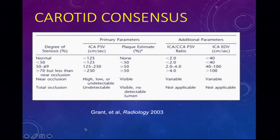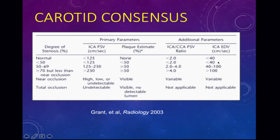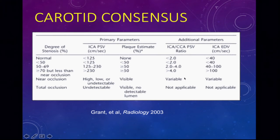We all know about the carotid consensus statement published in 2003, where we correlate the degree of stenosis with the peak systolic velocities and the visual plaque estimate of the internal carotid arteries. The ICA-CCA ratio and the end diastolic velocity parameters are additional supplemental or secondary parameters. The key parameters are the velocity and the amount of plaque that we see. However, the ICA-CCA peak systolic velocity ratio can be very helpful if we can't obtain accurate velocities and need to look at velocity ratios.